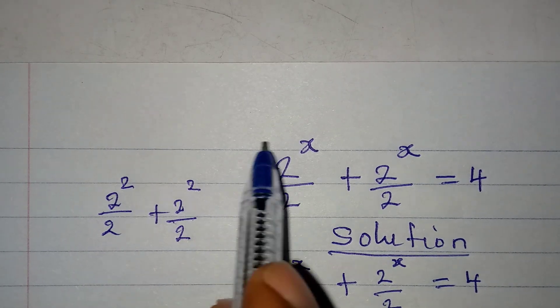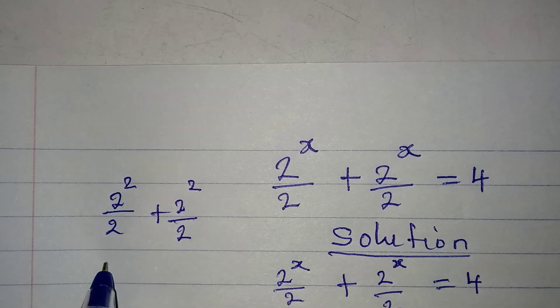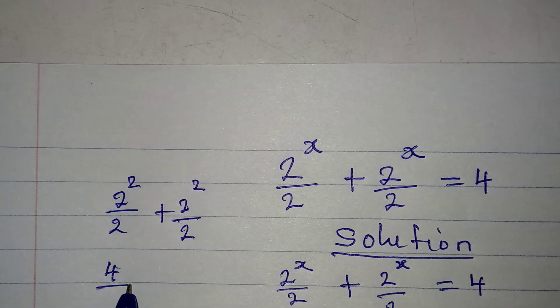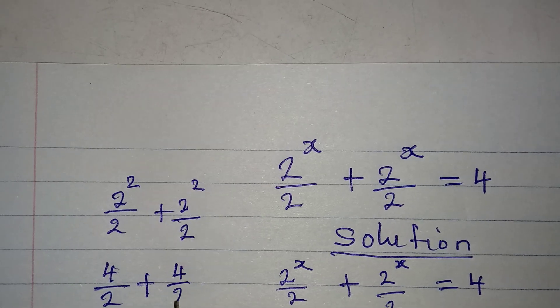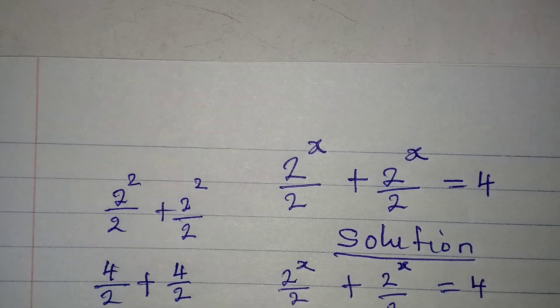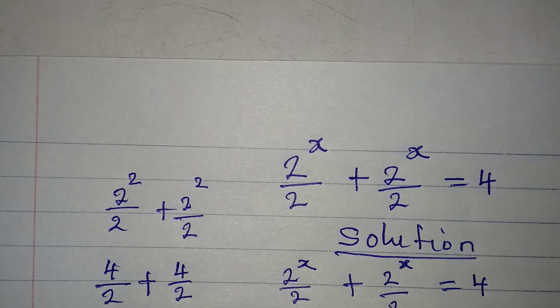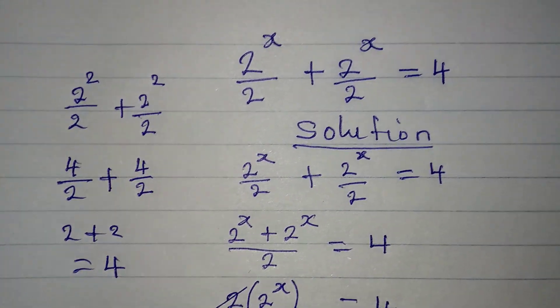2^2 will be 4 over 2, plus here again we have 4 over 2. Now 4 divided by 2 is 2, so we have 2 plus 2, and this will give us 4.